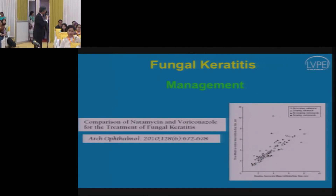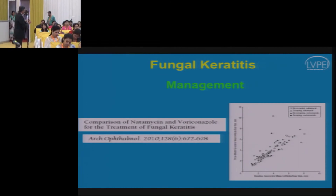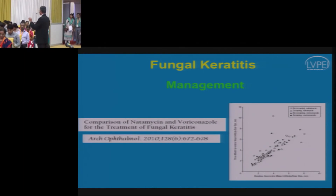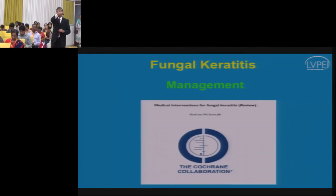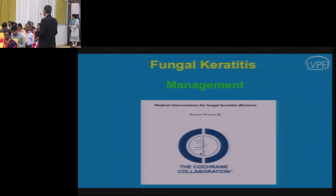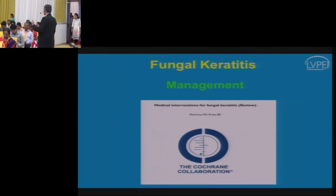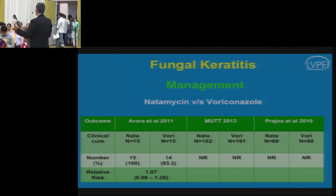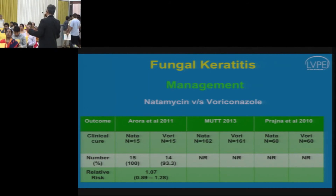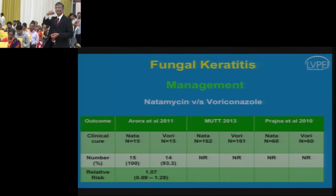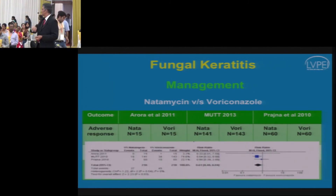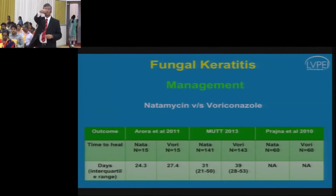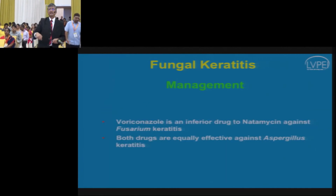Against some fungal organisms, voriconazole is counterproductive — patients treated with voriconazole had higher rates of corneal perforation, especially with Fusarium infections. A Cochrane library review of all comparative studies confirmed voriconazole is not superior to natamycin and is associated with higher risk of corneal perforation and need for keratoplasty.